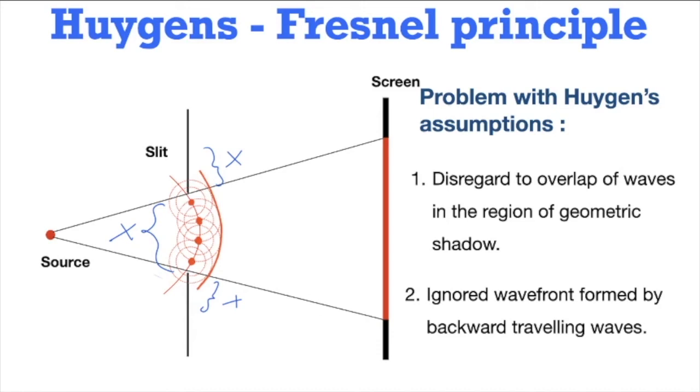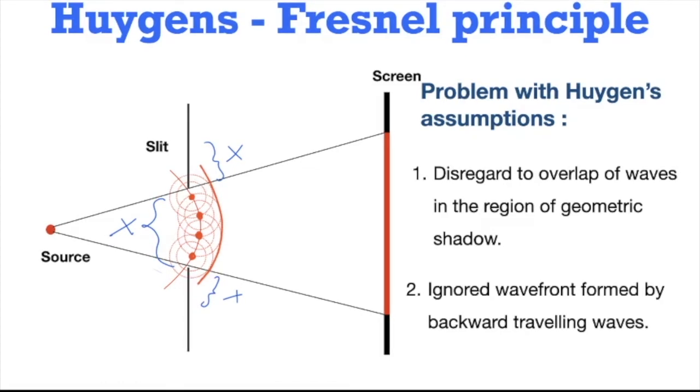Later, Fresnel took into account the superposition of these wavelets, and the mathematics involved with the Huygens-Fresnel principle was carried out by Kirchhoff, which is also called Fresnel-Kirchhoff integral. These secondary wavelets interfere to give the diffraction pattern on the screen. Thus, with these additions by Fresnel, Huygens-Fresnel theory was successful in explaining the diffraction of light.